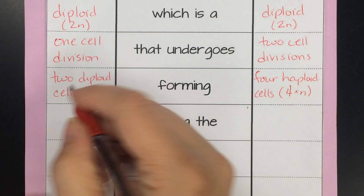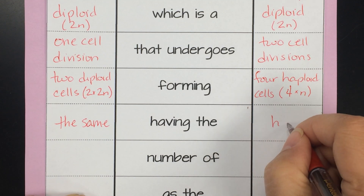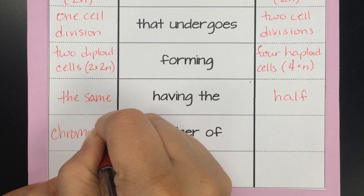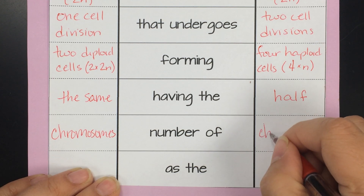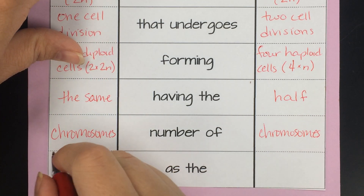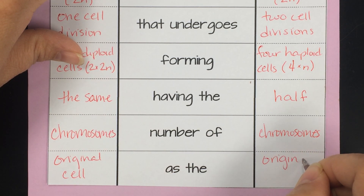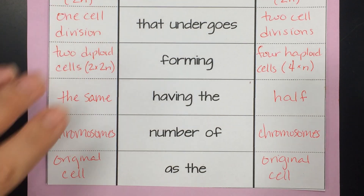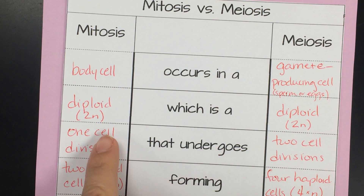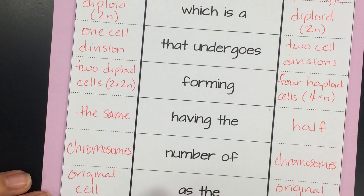These cells have half the number of chromosomes as the original cell for both sides. So ultimately we end up with a nice big sentence: in mitosis it occurs in a body cell, which is diploid, that undergoes one cell division forming two diploid cells having the same number of chromosomes as the original cell.